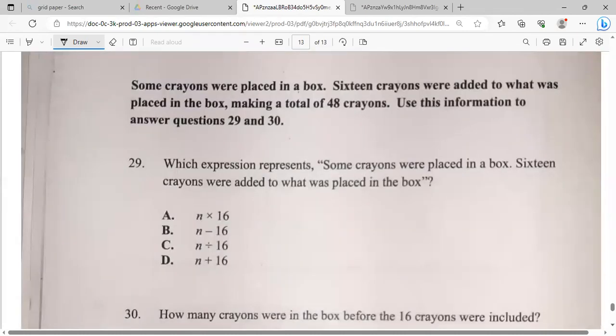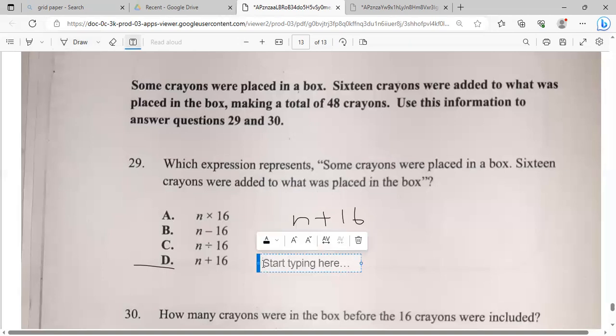Some crayons were placed in a box. 16 crayons were added to what was placed in the box, making a total of 48. Use this information to answer questions 29 and 30. Expression. Some crayons are placed in a box. 16 crayons were added to the box. That would be, you had a number. We don't know what the number is. But they said that we added 16. So that would be N plus 16. Guys, I'm putting my name and number because I know people want their child to be a part of my class. So you still can for grade 5 and grade 6. Space is going fast, guys. So I'm going to send it 8765492161.